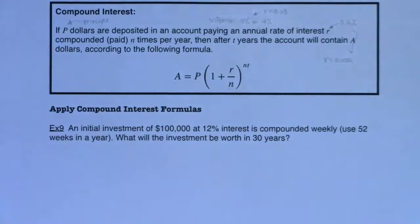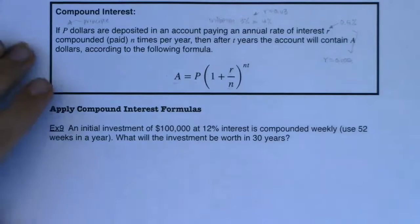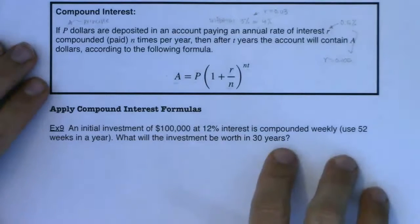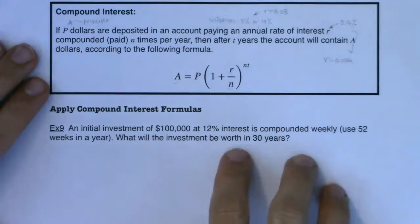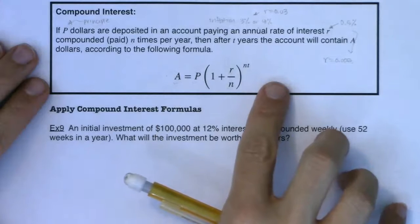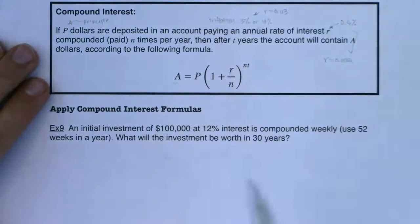All right. Five variables. How these problems typically work out is I will give you four of those variables and you're going to need to solve for the fifth one. So let's read through example nine and see if we can spot which of these five letters I gave you and which one I'm asking you to find.